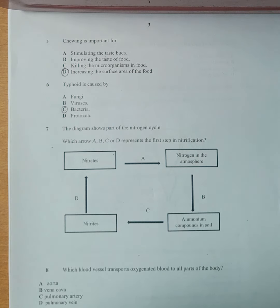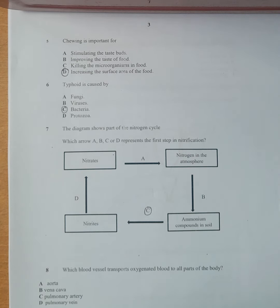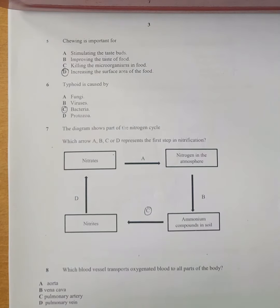Number 7: the diagram shows a part of the nitrogen cycle — which arrow represents the step in nitrification? We are going to select C as our answer. The nitrogen cycle is a frequently examined question. Make sure you understand denitrification, decomposition, and nitrogen fixation. The conversion from nitrates to nitrogen in the atmosphere is known as denitrification.